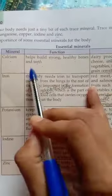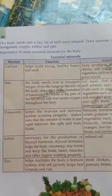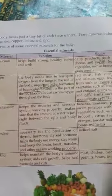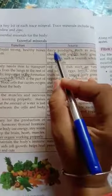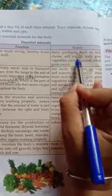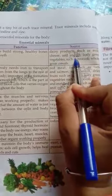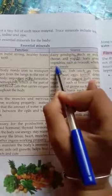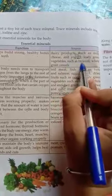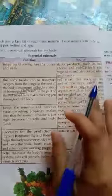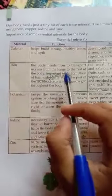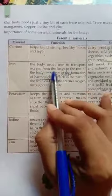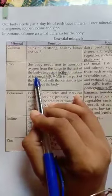This is important and healthy. Where we get calcium: dairy products such as milk, cheese, and yogurt, leafy green vegetables, broccoli, and whole grains. The body needs iron to transport oxygen from the lungs to the rest of the body.